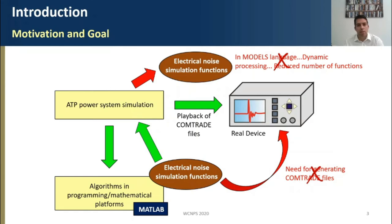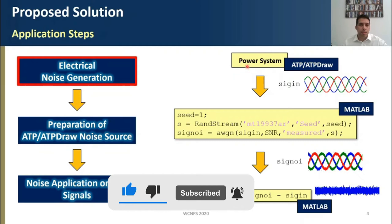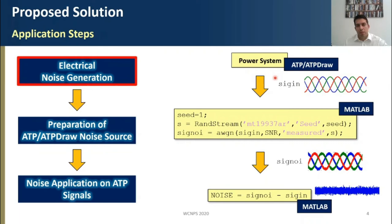The proposed solution is divided into three simple steps. The first one consists in the electrical noise generation. Basically, we here simulate the power system using the ATP ATPDraw. So, we have as a result, the SIG IN, which is a signal without noise. Then these signals are imported into MATLAB, where we use this very simple routine here to add a white Gaussian noise into the input signal SIG IN.